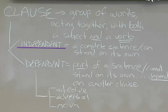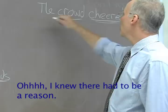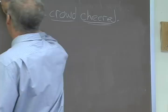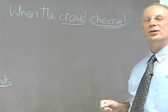This terminology is important, because if you look in a grammar book or a grammar site online, they are going to talk about clause structures when they talk about punctuation — that's why we're going through all of this. 'The crowd cheered' is an independent clause. If I put the word 'when' in front of it, it's no longer an independent clause, but it still has a subject and a verb. It's still a group of words acting together. This is now a dependent clause.